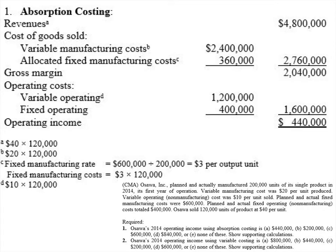The absorption costing income statement should give you $440,000 in operating income. Revenues are the same under either method: 120,000 units sold at $40 per unit gives us $4,800,000 in revenue. Under absorption costing we need to calculate gross profit, which is revenues minus cost of goods sold. Cost of goods sold is made up of all variable costs — direct materials, direct labor, and variable overhead — plus any allocated fixed overhead.